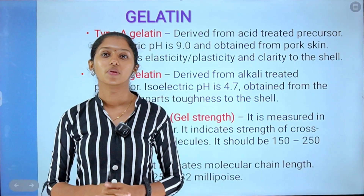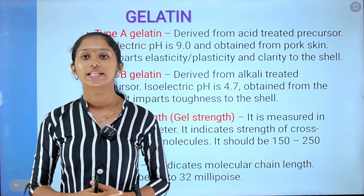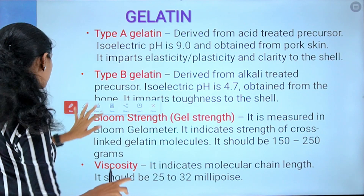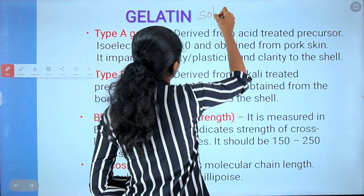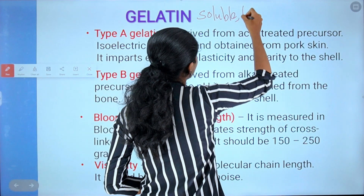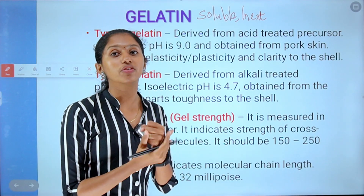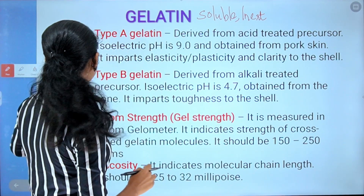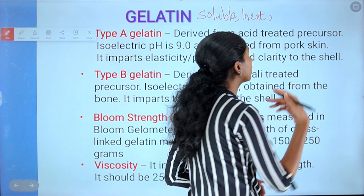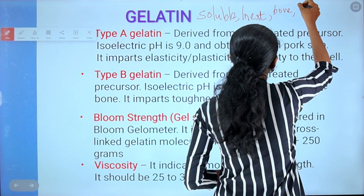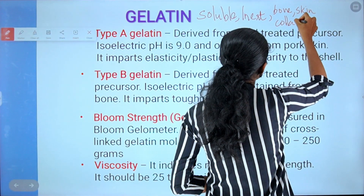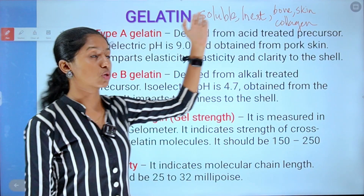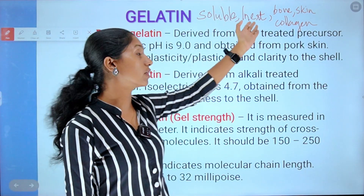What do we mean by the envelope — why is it gelatin? Gelatin is a soluble substance. It is an inert substance. It is of animal origin — obtained from the bones, skin, and collagen fibers of animals. Gelatin is obtained from the bone, skin, and collagen of animals. It is soluble in water and is also an inert substance.